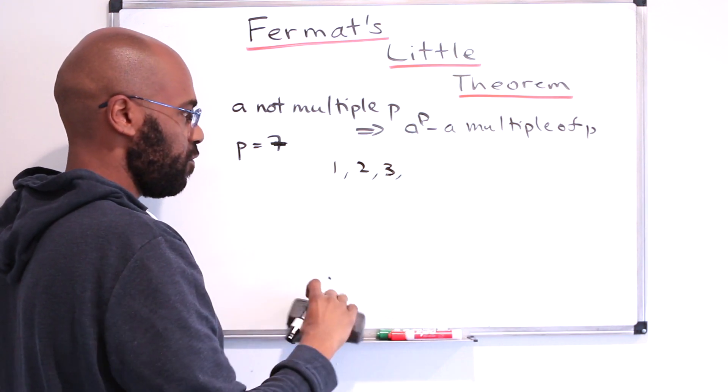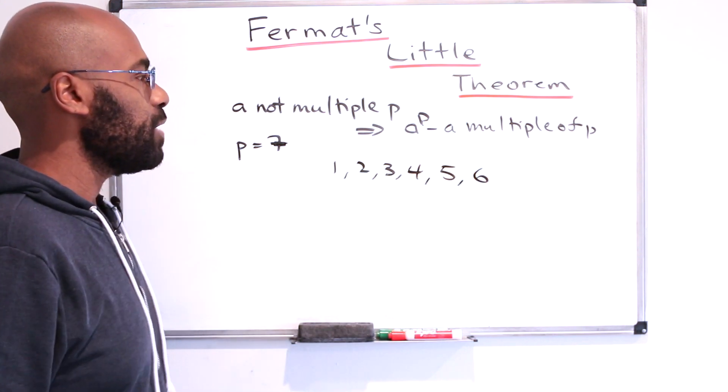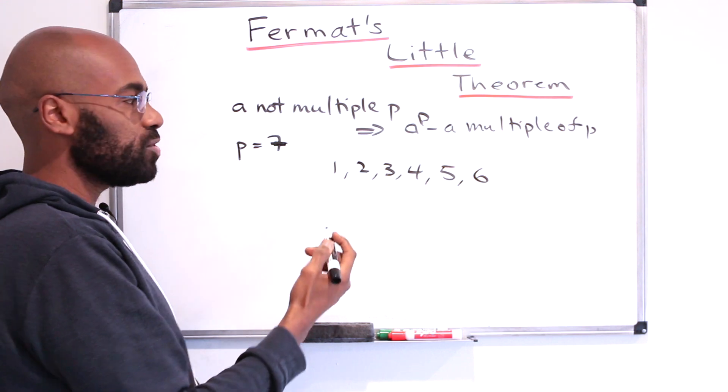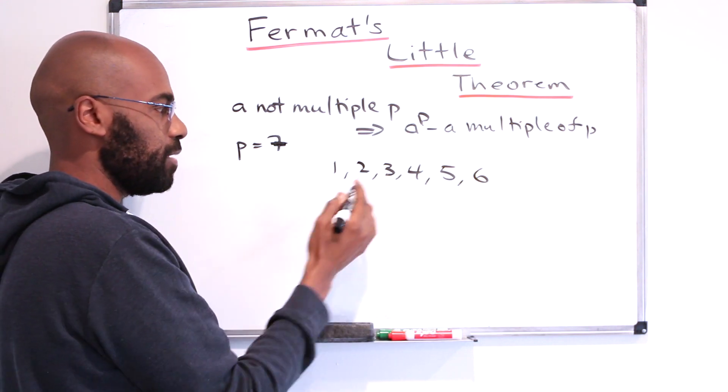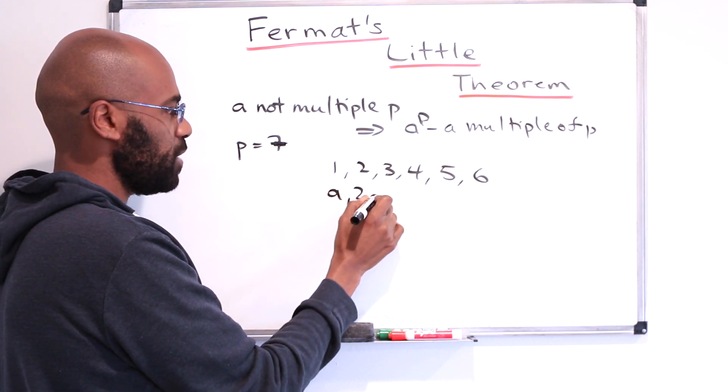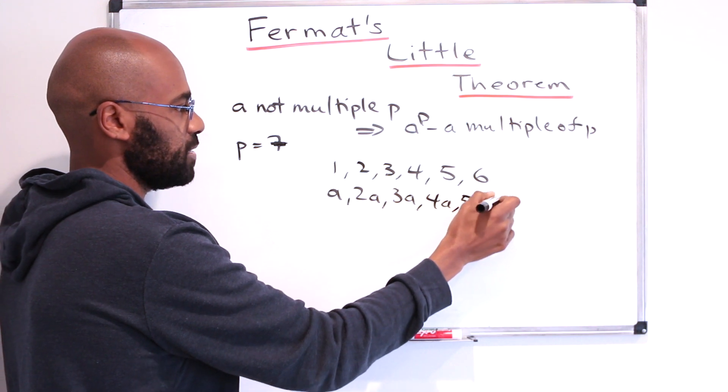So we'll write down the six numbers: 1, 2, 3, 4, 5, 6. Now we're given this random number a that's not a multiple of p. What we'll do is multiply all of these elements by that number. So we'll get a, 2a, 3a, 4a, 5a, and 6a.